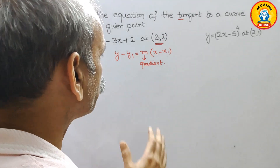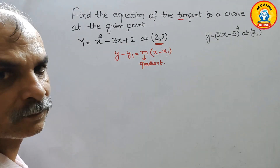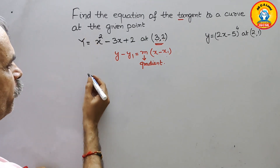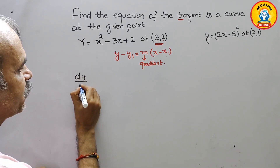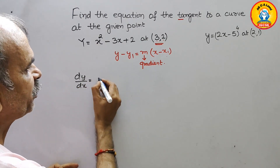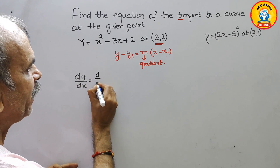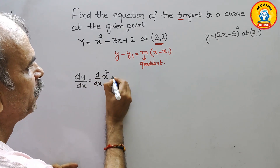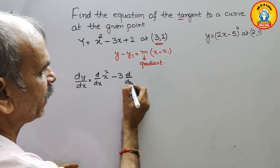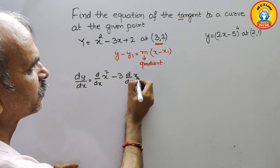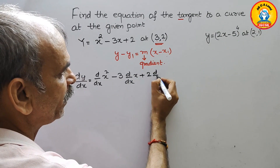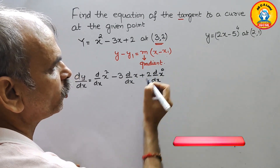To find m, we have to differentiate the curve. So we will differentiate. If you differentiate, dy by dx is equal to d by dx of x squared minus 3x. The 3 will come out, and here comes d by dx of x, plus 2 will come out, and here it will be d by dx of x to the power of 0.